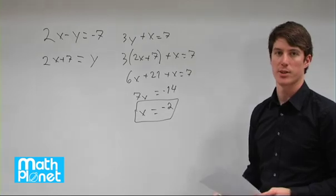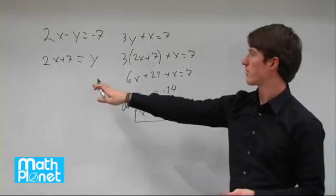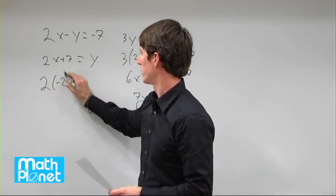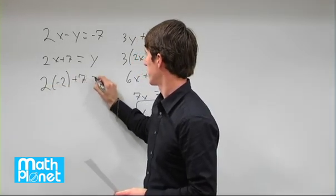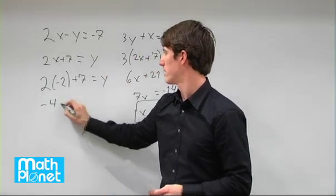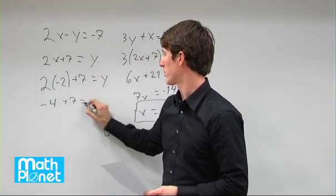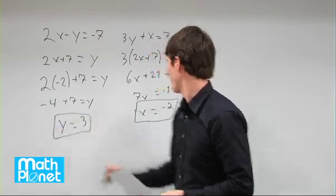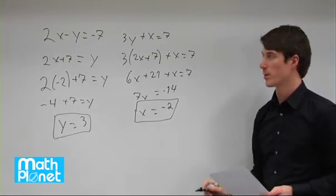Now we can take this negative 2 and plug that in for this equation here and solve for y. So 2 times negative 2 plus 7 equals y. 2 times negative 2 is negative 4, plus 7 equals y. So y equals 7 minus 4, which is 3. We have x equals negative 2, y equals 3.